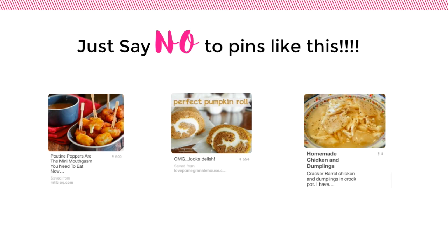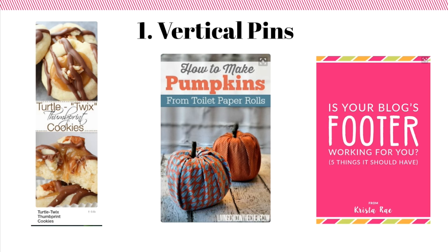You might say, 'Christy, vertical pins just don't look good in my blog layout.' I totally get that — I also have a blog layout that looks much better with horizontal pins. But here's what I do: I create two separate images — a horizontal image for my blog post, and then a vertical image for Pinterest that I stick right at the bottom of my post. That way, when someone's done reading, they can just click it and pin it. So if you feel strongly about a horizontal image on your blog, just make sure to create two and only pin the vertical one.